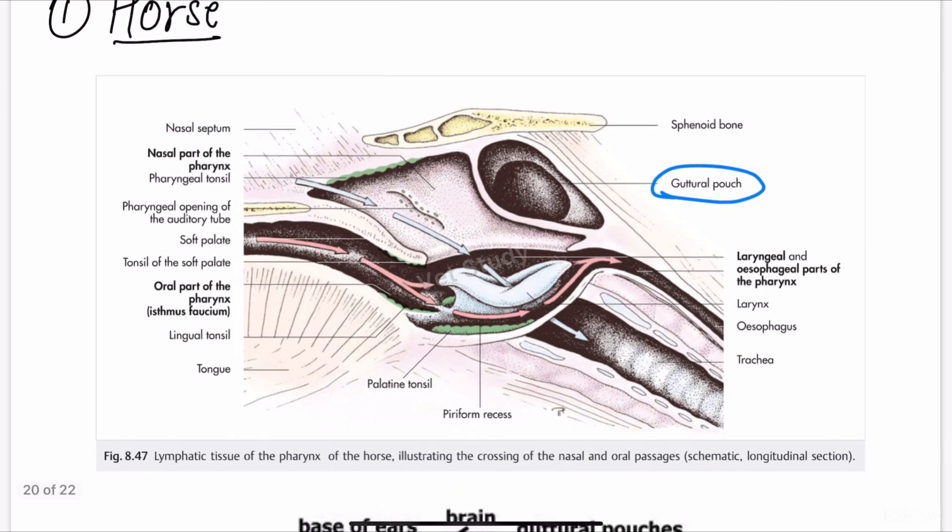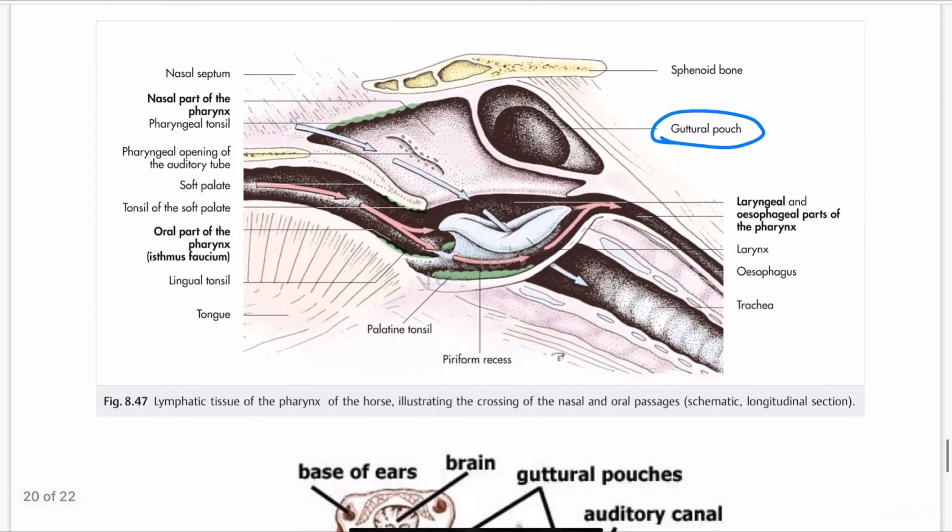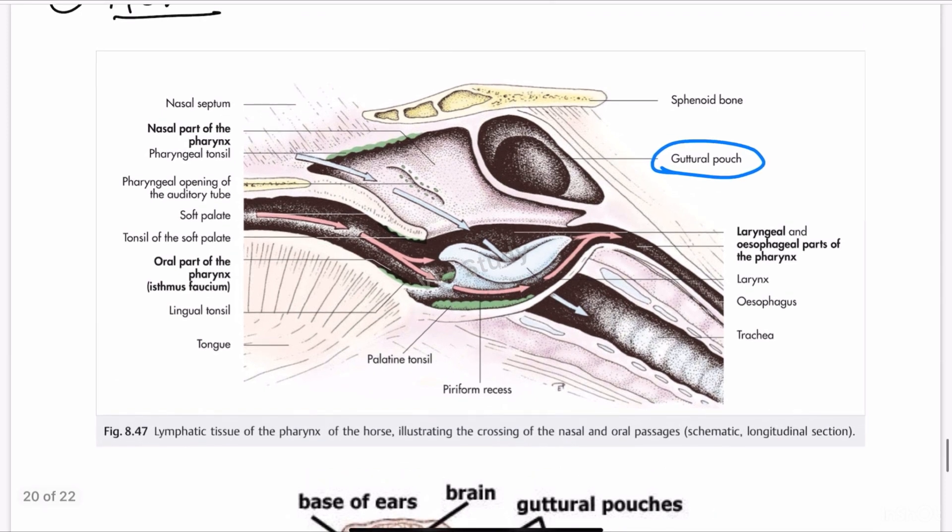The esophagus opening is narrow in horses, and the posterior nares are larger. Now let's talk about the guttural pouch in detail. What are these guttural pouches? They are a pair of large mucous sacs, as you can see here.